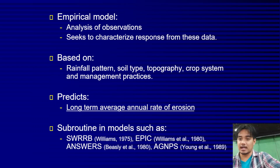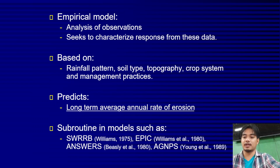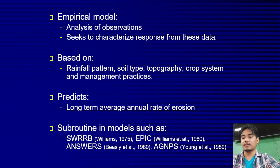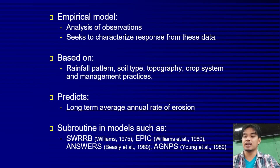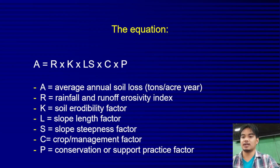The USLE is based on rainfall pattern, soil type, topography, crop system, and management. It predicts the long-term average annual rate of erosion. There are subroutine models such as FWRRB by Williams (1975) and EPIC (1980), but the most commonly used is still the USLE.